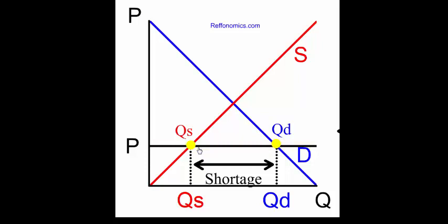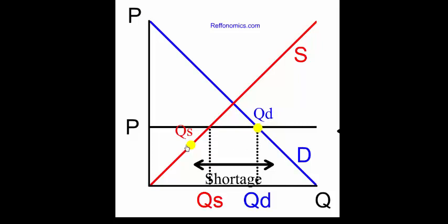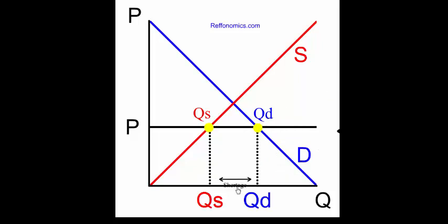If the market is allowed to adjust, price will rise. As price rises, the quantity demanded goes down and the quantity supplied goes up. You'll still end up with a shortage, but the shortage will be smaller.